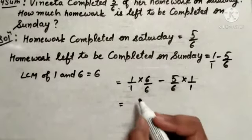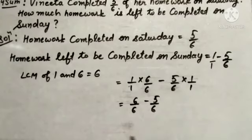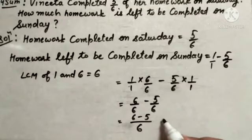So, this can be written as 6 upon 6 minus 5 upon 6. As you can see here, now this become a like fraction. In the like fraction, denominators are same. We will take it only one time. And, numerator can be written as 6 minus 5. This will be equals to 1 upon 6. That is our required answer.